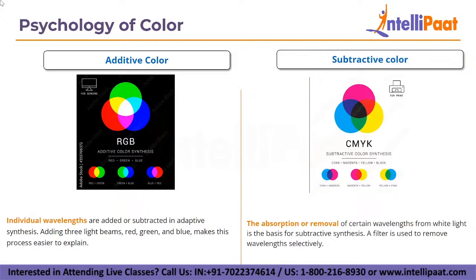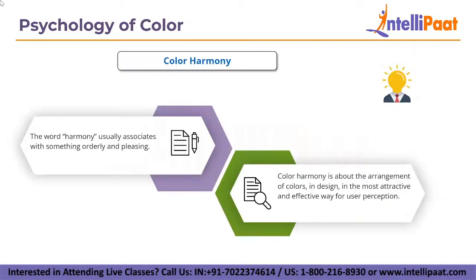The additive color spectrum is wider than CMYK, which is why designers are recommended to convert their projects to the subtractive color system before printing so they can see results close to what they'll get. However, if you're working on a digital project, the RGB color system is a wise choice because it allows creating amazing things with its wide color spectrum.